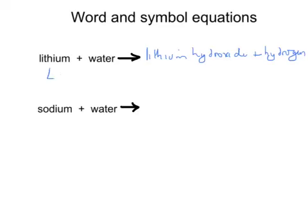Lithium is Li and water is H2O. Lithium hydroxide is made up of two ions—the Li+ and the OH- ions—so the formula is LiOH and hydrogen is H2.